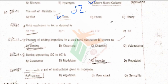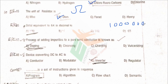To find the octal equivalent of decimal 64: 64 equals 2 raised to the power 6, which in binary is 1000000. Converting this binary number to octal by grouping in sets of three bits gives 1, 0, 0 — so the octal equivalent of 64 decimal is 100 (octal). That is the correct answer.